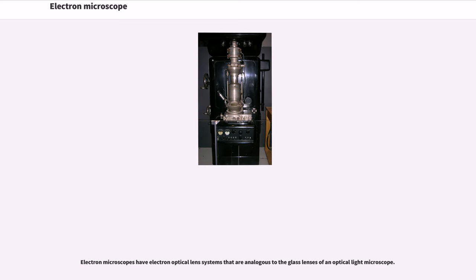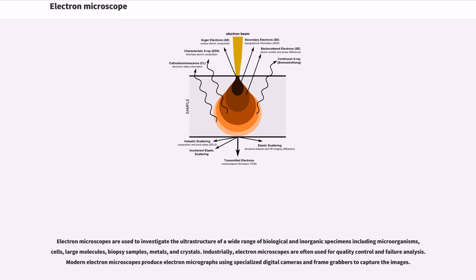Electron Microscopes have electron optical lens systems that are analogous to the glass lenses of an optical light microscope. Electron Microscopes are used to investigate the ultra-structure of a wide range of biological and inorganic specimens including